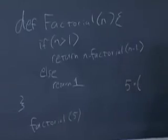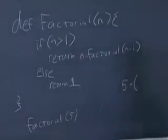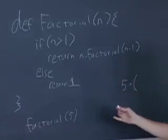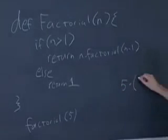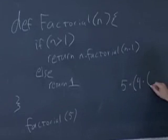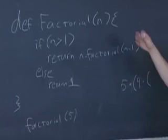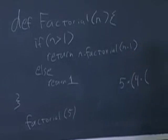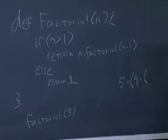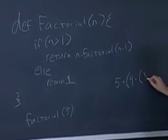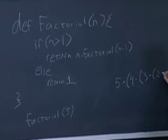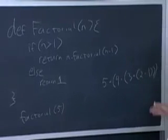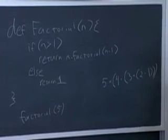So we return 4 times factorial of 3. So 5 times 4 times factorial of 3. So we loop, we call itself a bunch of times until we get down to 1. So that's what actually ends up happening. This is recursion.